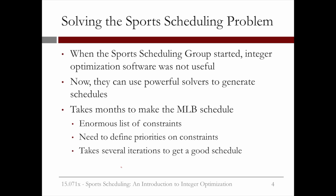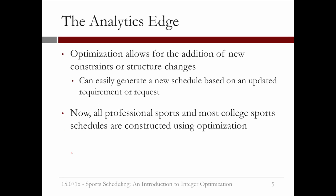This is due to several reasons, including the enormous list of ever-changing constraints that they have to account for, the need to define priorities on the constraints to find a feasible solution, and the fact that it takes several iterations to get a good schedule. But even with these challenges, analytics offers a significant edge in sports scheduling. The use of optimization allows for the addition of new constraints or schedule changes, and a new schedule can easily be generated based on an updated requirement or request. Now all professional sports and most college sports construct their schedules using optimization.